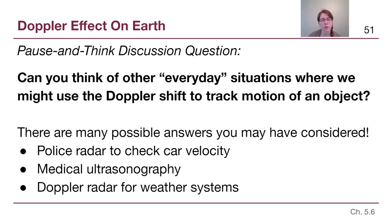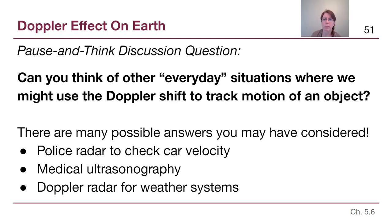Just to make the connection before we start adding the astronomy uses — there are actually a lot of different ways we use the Doppler effect here on Earth. When police radar guns measure how fast a car is going, they're able to do that whether the car is driving towards or away from them by measuring the amount of shift. They send out a radio wave, it bounces off the car and comes back, and it is different based on the speed of that car.